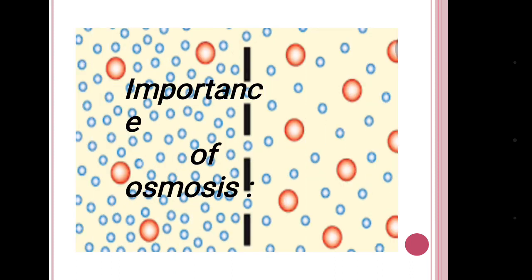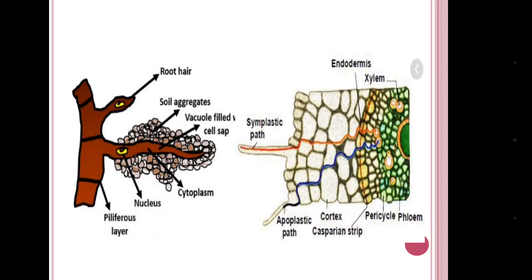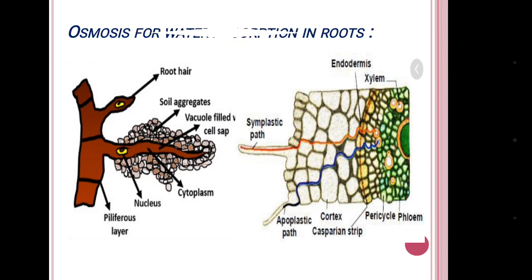Now, what is the importance of osmosis? The first importance lies in water absorption in roots. The cell sap inside the root hairs is of higher concentration, so water enters through osmosis, and this osmotic water finally enters the xylem through the endosmosis process.